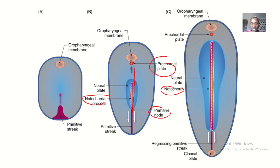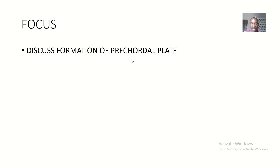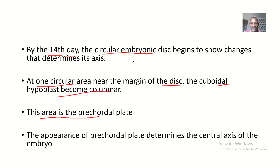In the pre-cordial area, the cuboidal hypoblast becomes columnar — it becomes circular. And this circular portion is called the pre-cordial plate.